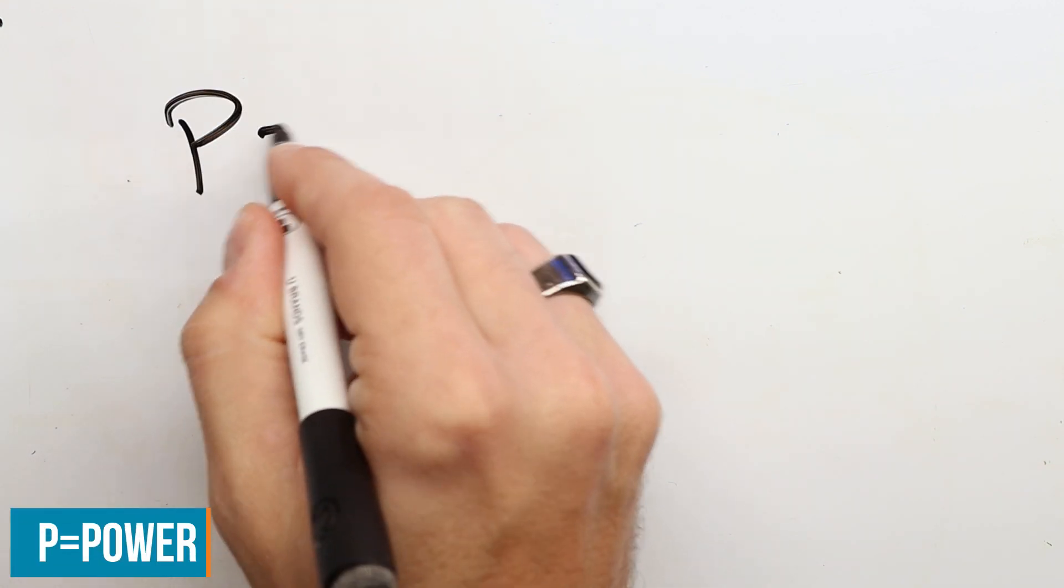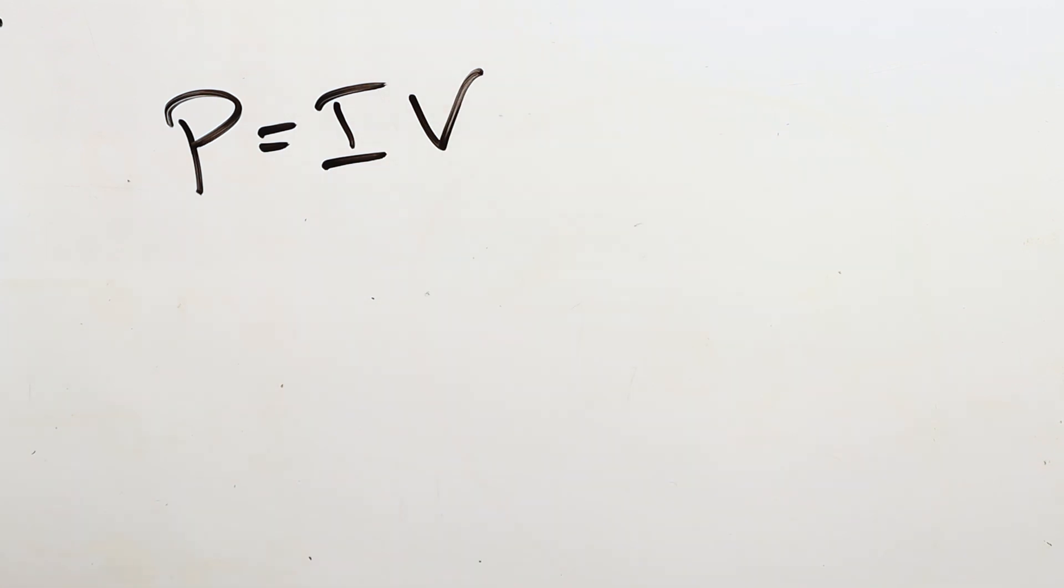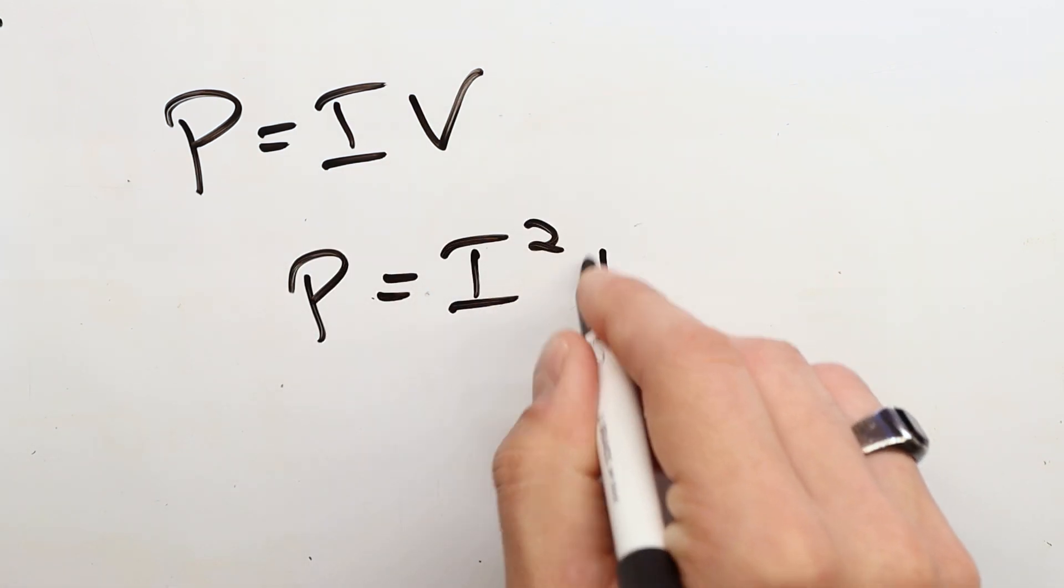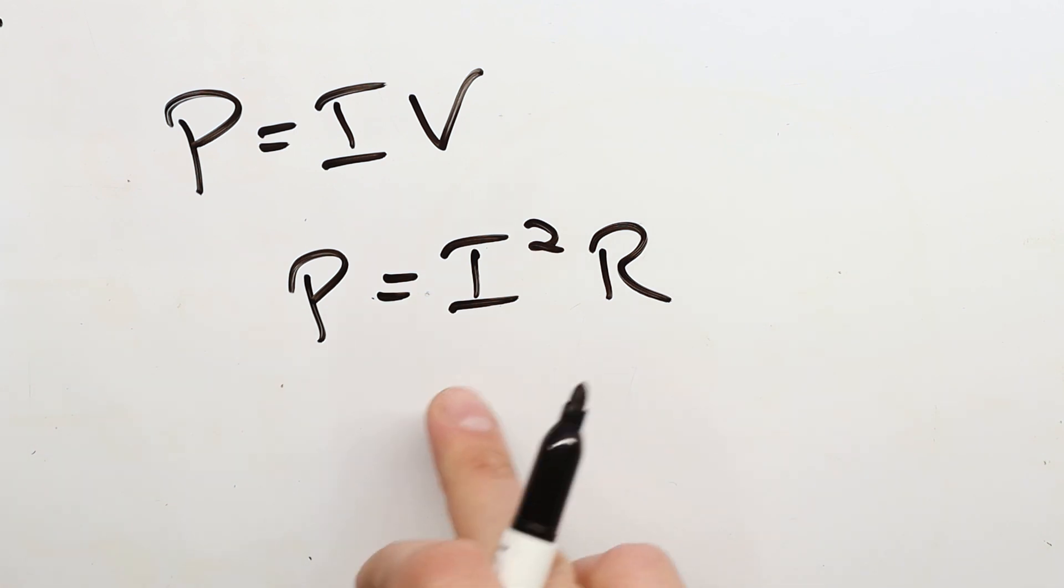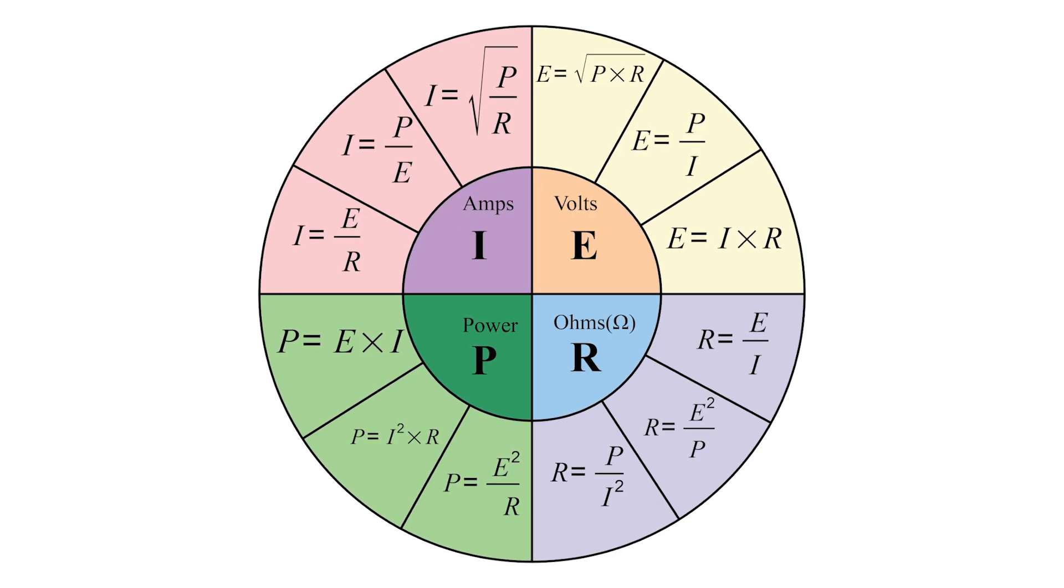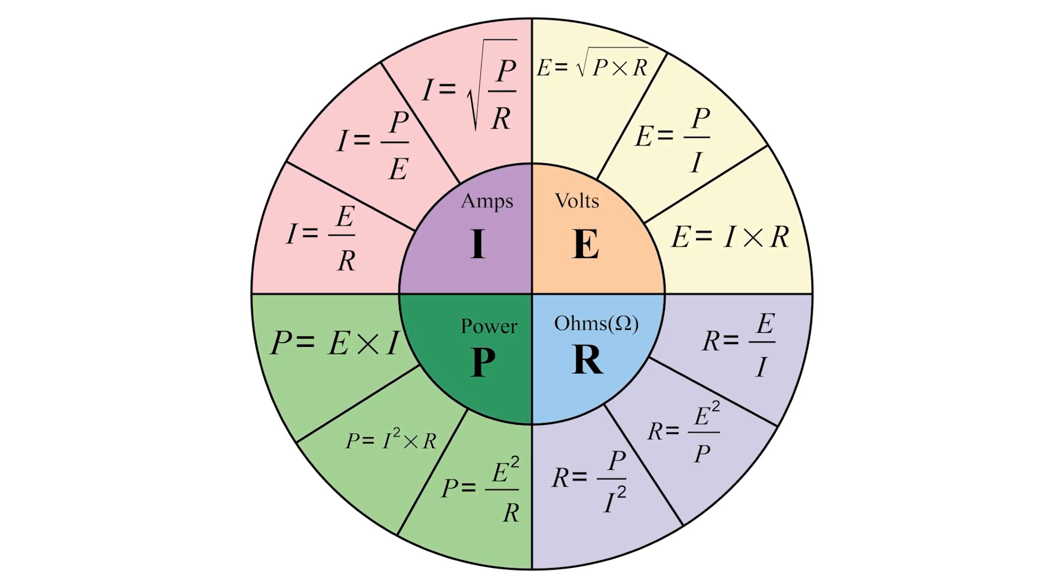Now there are other derivations that are useful to find the power or how much heat a device is dissipating. One useful one is P equals power equals current times voltage. Another is the I squared R law, which is very important if you know the current resistance but you don't know the voltage, you can still figure out how much power a device is dissipating. Here's an image showing you all of the different derivations for Ohm's law that might be useful to you, but we've shown you the most common ones here today.